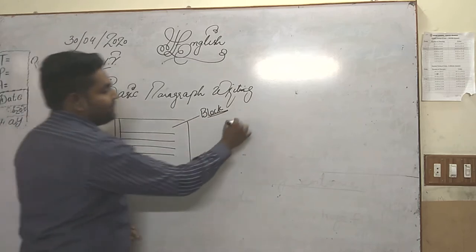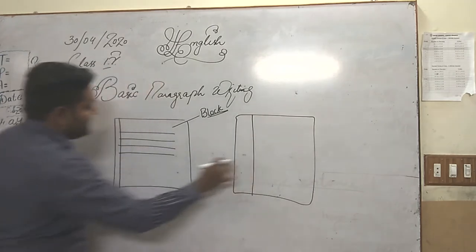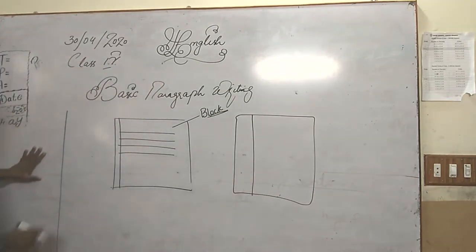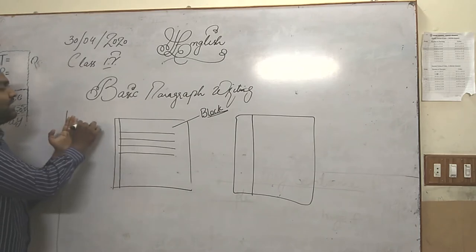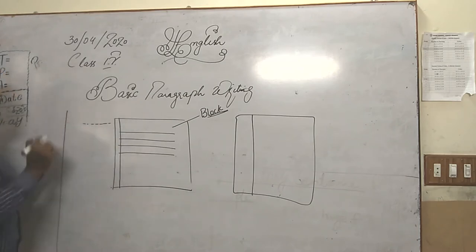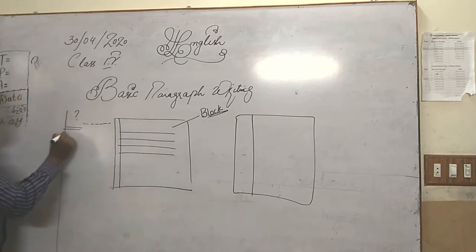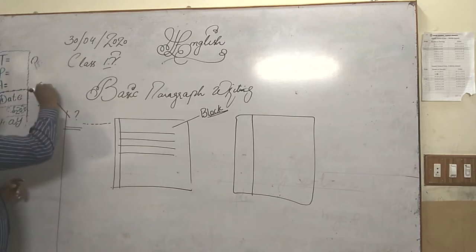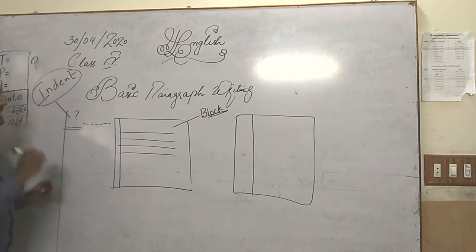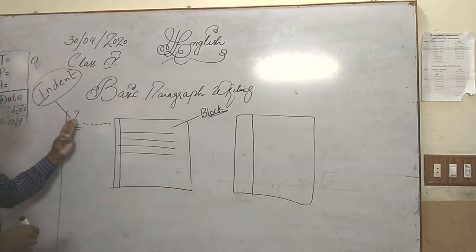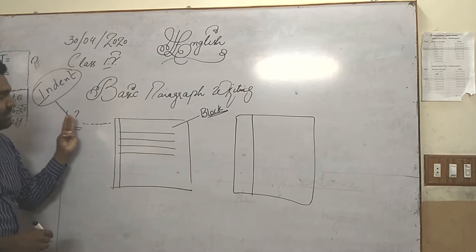The second type: for example, this is the margin line and we are leaving a space of 2 to 3 fingers, and then we are starting our paragraph writing. So what is this space called? This is called indent. The space which we are leaving after the margin line — 3 to 4 fingers — this space is called indent.